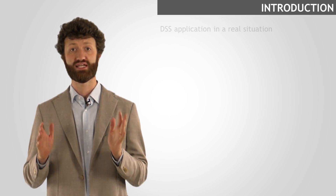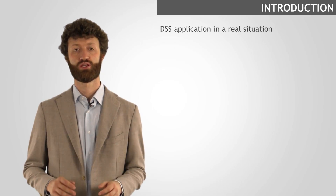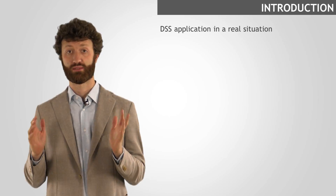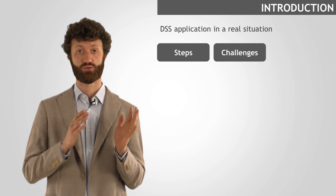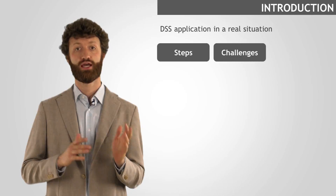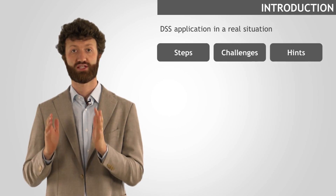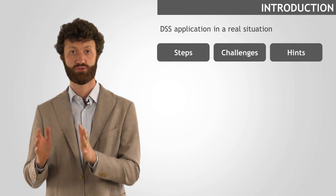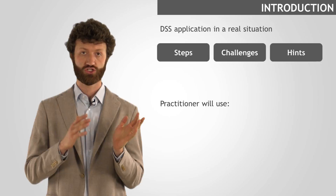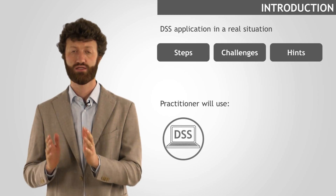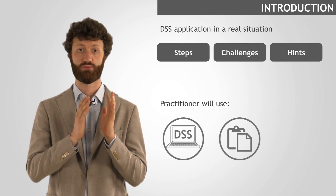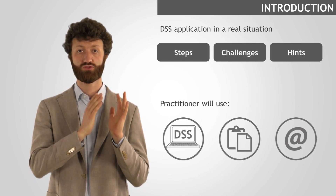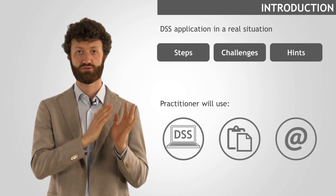In this lesson we discuss how to apply the DSS in a real situation. We will speak about the steps to perform, what the most common challenges and situations are, and how to improve the quality of the technology selection process. The practitioner will have to use the DSS, the technology guidelines, and the material available on the website and what was introduced in the previous lessons.